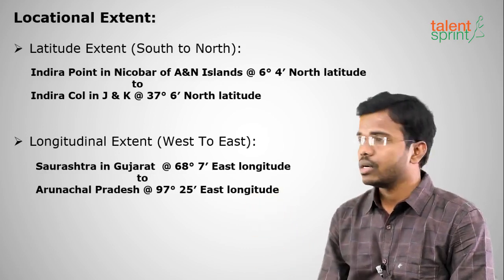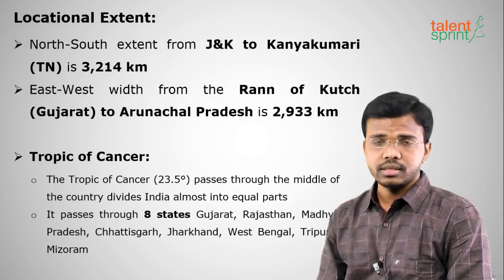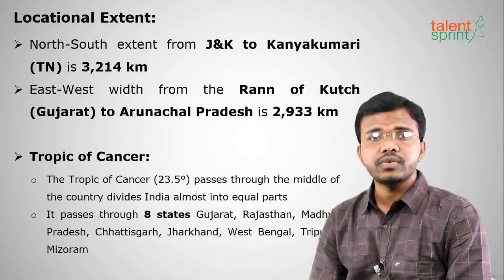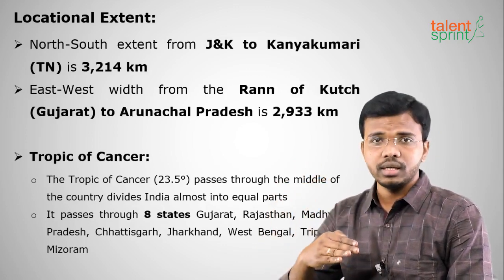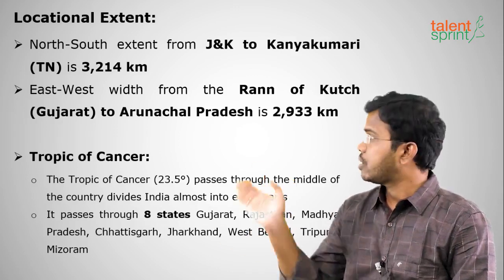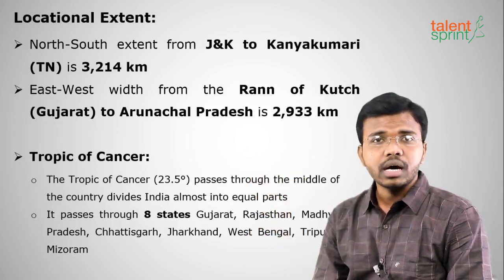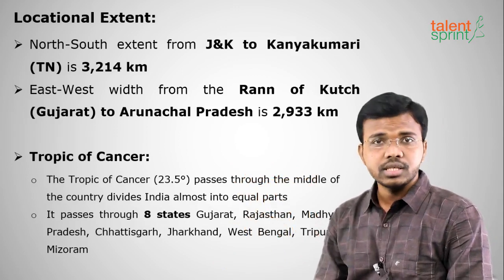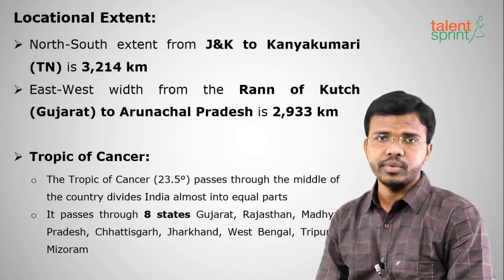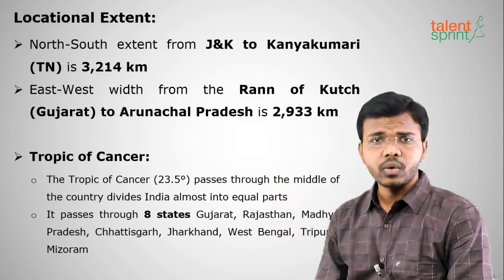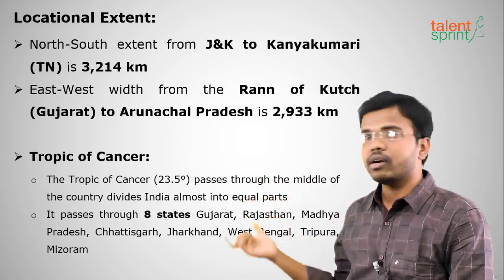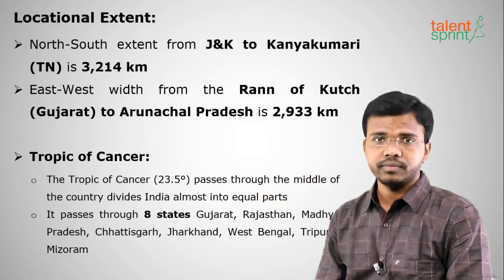For locational extent, the north-to-south distance on the mainland — from Jammu & Kashmir to Kanyakumari — is around 3,214 kilometers. From west to east — from Rann of Kutch in Gujarat to Arunachal Pradesh — the distance is 2,933 kilometers. These are very frequently asked questions.